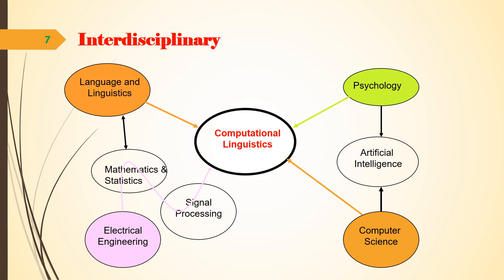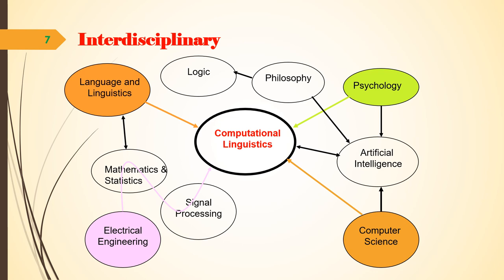If we see the relation between computational linguistics and mathematics or statistics, as evident from the popular definition, computational linguistics is concerned with the statistical or rule-based modeling of natural language from a computational perspective. Moreover, computational linguistics is linked to advanced areas of computer science like artificial intelligence, human-computer interaction, electrical engineering, and language engineering, and so on.